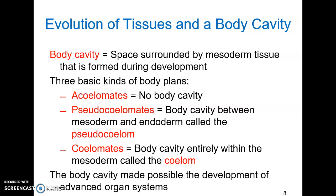Once you start seeing tissues in animals, you can also start to see a body cavity. A body cavity is a space surrounded by mesoderm tissue, formed early in embryological development, and is distinct from the digestive cavity. The digestive cavity is open to the exterior environment; the body cavity is not, and is filled with either liquid or gas. There are three basic kinds of body plans: acoelomates have no body cavity; pseudocoelomates have a body cavity housed between the mesoderm and the endoderm; and coelomates have a body cavity entirely enclosed within the mesoderm, called the coelom. The body cavity is advantageous because it enables development of advanced organ systems, accommodates and supports organs, distributes materials throughout the body, and fosters interactions and development of organs.